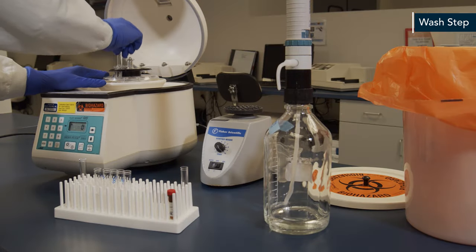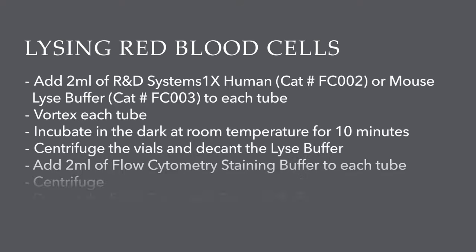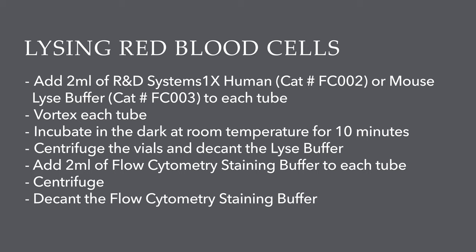If you're using whole blood, red blood cells should be lysed at this point. To do this, add 2 milliliters of R&D Systems 1X human or mouse lysis buffer to each tube. Both may be purchased on our website under catalog numbers FC002 and FC003 respectively. After adding the lysis buffer, vortex and incubate in the dark at room temperature for 10 minutes. Centrifuge and wash the cells in flow cytometry staining buffer as before.